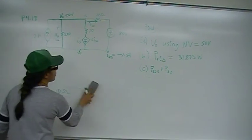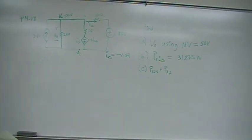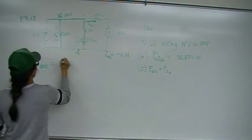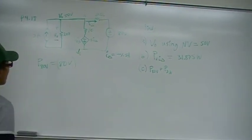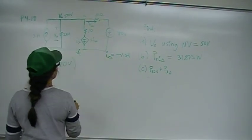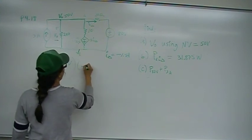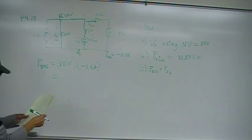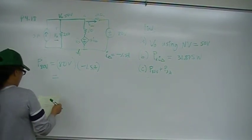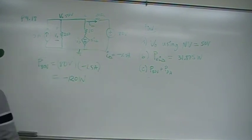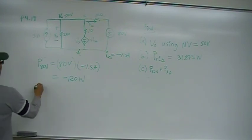For part C, we need to find the power consumed or delivered by the two independent sources. So, P of 80 volts is going to be 80 volts times the current. And the current is going to be I delta, which we already figured out. So, I delta is going to be negative 1.5. And that gives you negative 120 watts that the 80 volt source is delivering to this circuit.